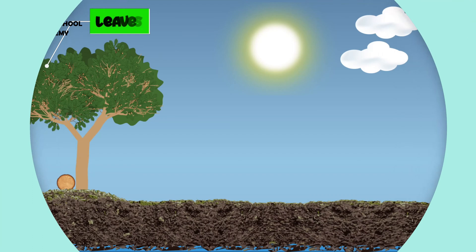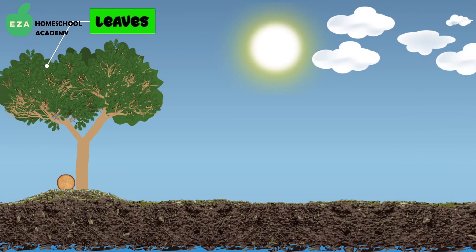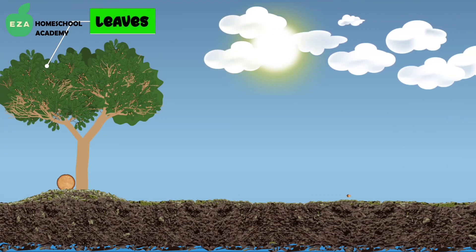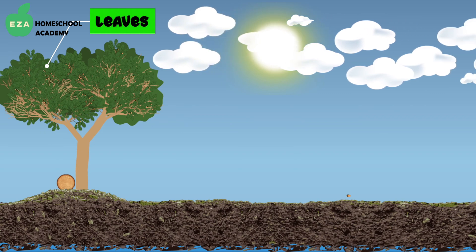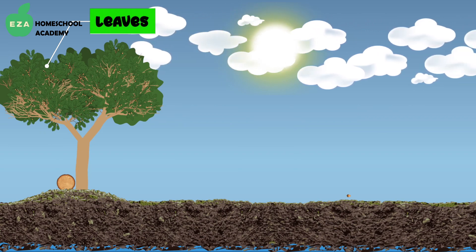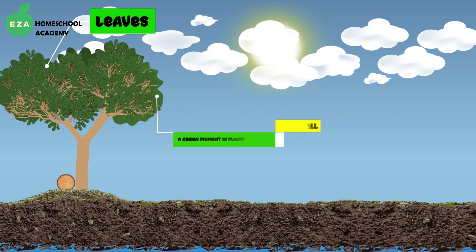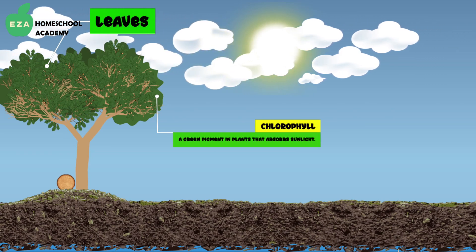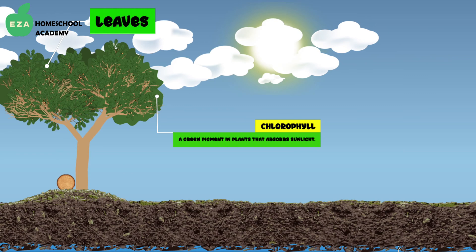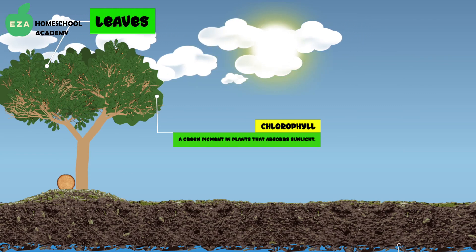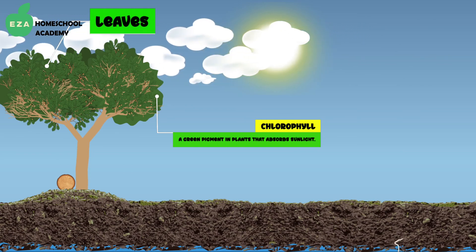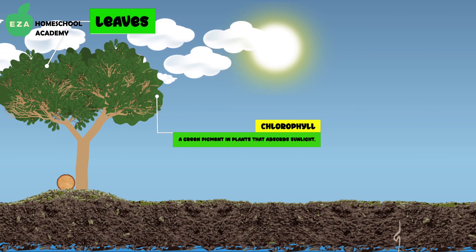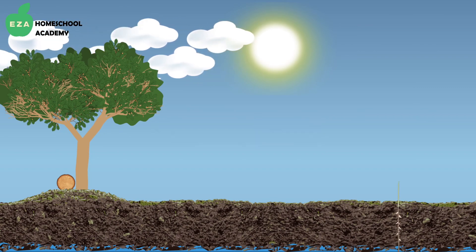Leaves appear in nature in a variety of colors, shapes, and sizes. The leaves of the tree contain a special chemical called chlorophyll. Chlorophyll is responsible for the green pigmentation of the leaves. Chlorophyll is necessary to trap the energy from the sun's rays.